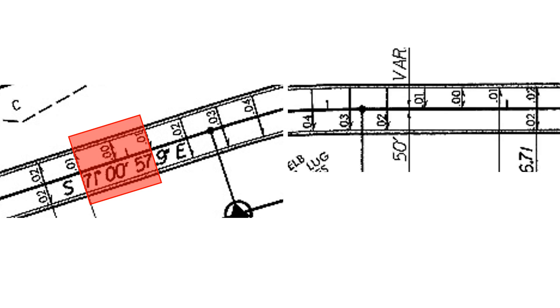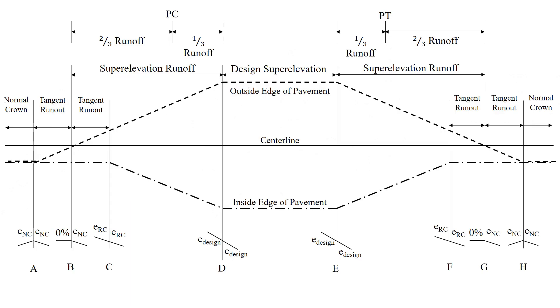Looking at this more closely, here's the location we can actually see on the design plans where we're less than or equal to 1% on the PC side of the curve, and also on the PT side of the curve. We can see the range of values we're looking for, and we know each of the 1% ranges is 20.84 feet, so we have two of those distances on each side of the curve. We'll see that come into play as we look at the profile view showing how the cross slope is changing throughout this horizontal curve.